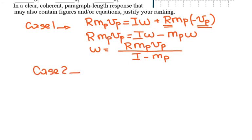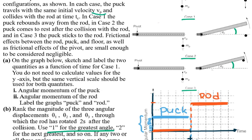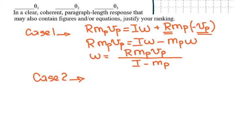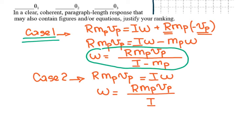For Case 2 the puck comes to rest after the collision with the rod, so the second term disappears. We have r·m_p·v_p = I·ω, with no puck motion remaining. Therefore ω = r·m_p·v_p / I.